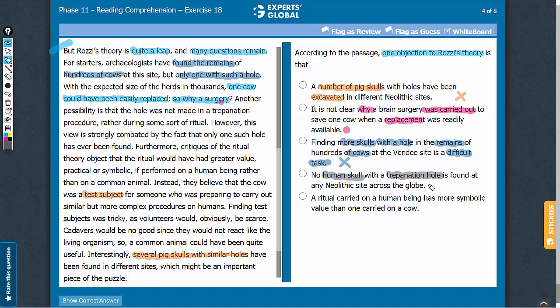Answer choice E: Symbolic value in rituals. This answer choice would relate to the ritual theory and not to Rosy's theory, so this answer choice can be eliminated. B is the correct answer.